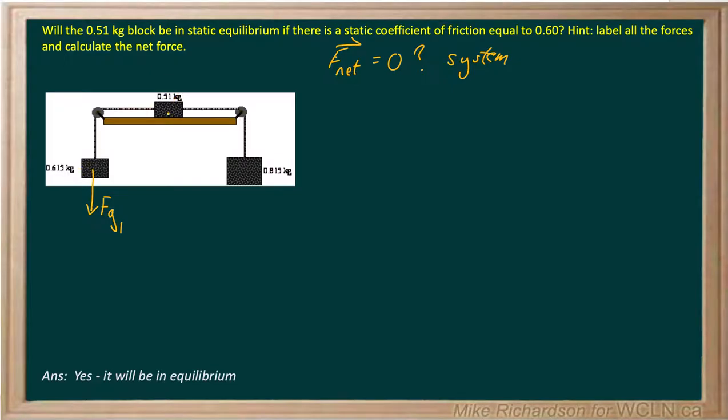We'll have a smaller force of gravity pulling it straight down, which we'll call Fg2. And then the mass on the right has the biggest force of gravity, which we'll call Fg3.